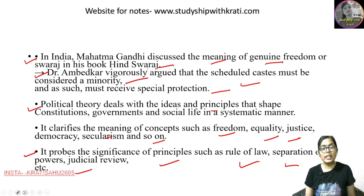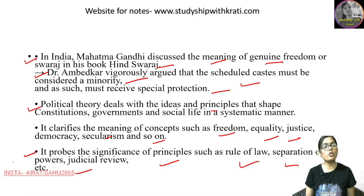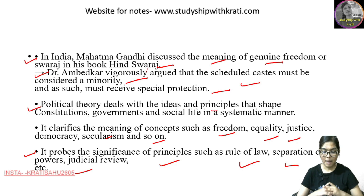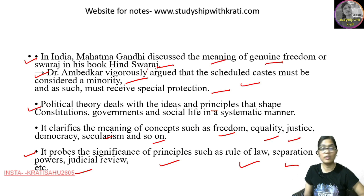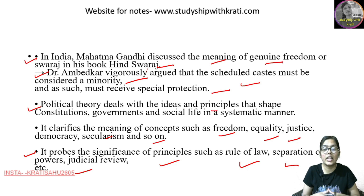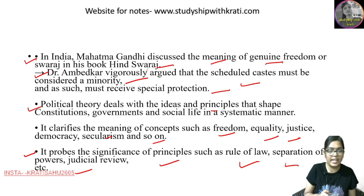Political theory also probes the significance of principles like rule of law, separation of power, and judicial review. To conclude: politics is about making agreements, making conflict, making negotiations, and power sharing. Power sharing can be used in government, companies, groups, at home, and among friends. In political theory, ideals and principles are studied — how they evolve, what we value in existing conditions, and how we came to value those values. This is what we learn in political theory.